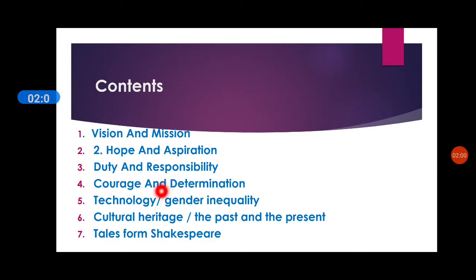The next unit is courage and determination. You are going to learn the lessons: determination, the man who planted trees, and 'It Couldn't Be Done', which is a poem. The grammar topics covered are adjectives, adjective phrases, and adjective clauses.